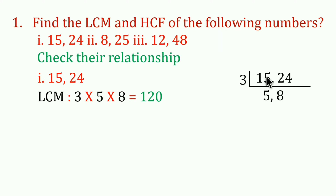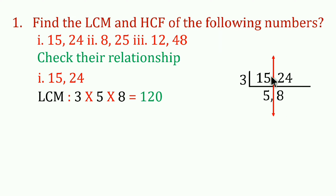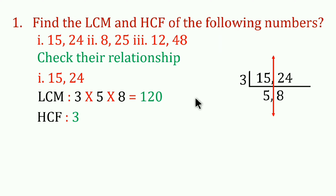Next, we find the HCF. We divide 15 and 24 by their common factors. Dividing by 3, we get 5 and 8. These have no further common factors, so the HCF of 15 and 24 is 3.